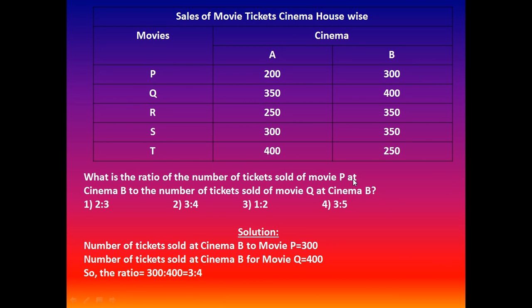Next question: What is the ratio of the number of tickets sold of movie P at cinema B to the number of tickets sold of movie Q at cinema B? Options: 2:3, 3:4, 1:2, 3:5. Number of tickets for movie P at cinema B is 300, and for movie Q at cinema B is 400. So the ratio is 300:400 = 3:4. Option 2 is correct.